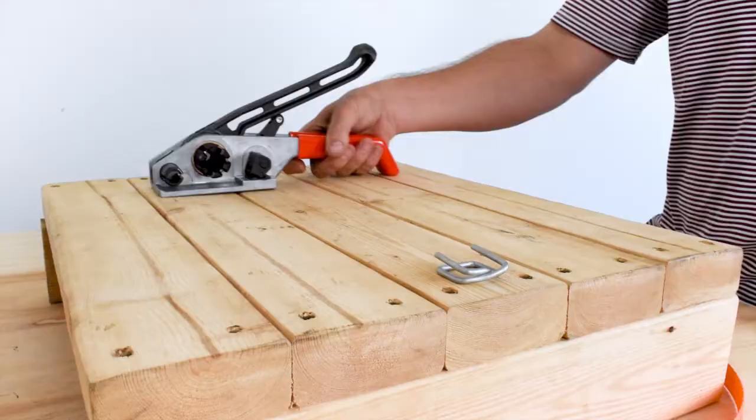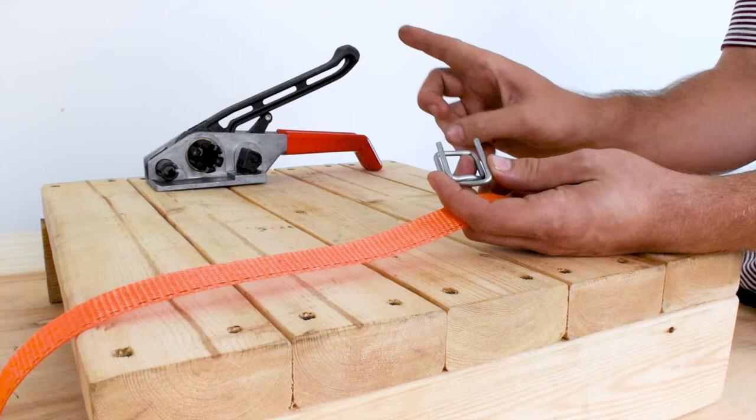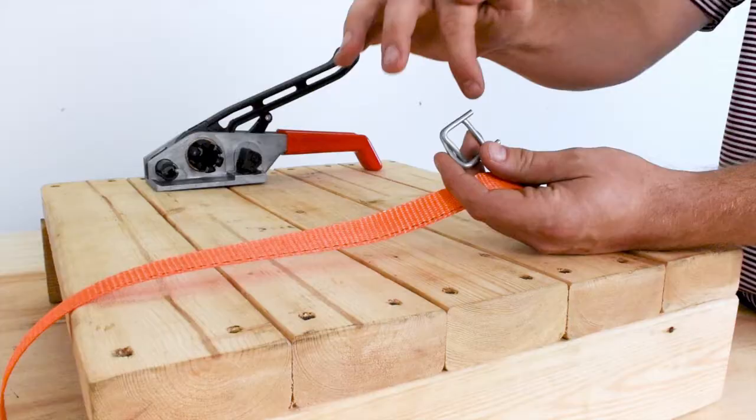The first step is going to be threading your strap through your wire buckle. I've got my three-quarter inch buckle right here, and one of the first things that you're going to want to be sure of is when you're holding your buckle that it is facing this direction, to your right. One of the ways you can remember that is by seeing it like a C here, C-shaped like the letter.